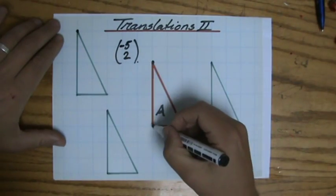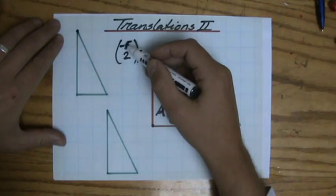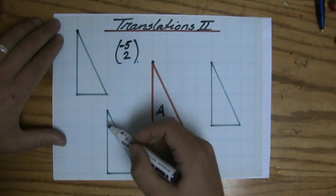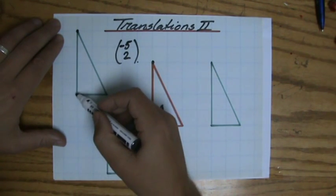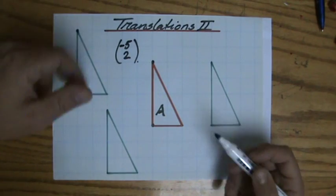Let's just check that. For instance, this point, five to the left, two up. One, two, three, four, five. One, two. Indeed, it's going to bring me over there. So that should be all right.